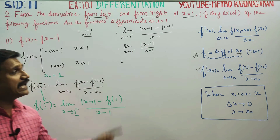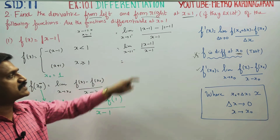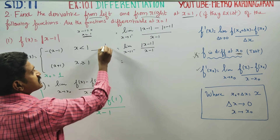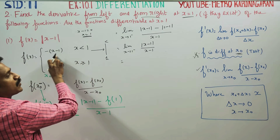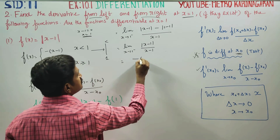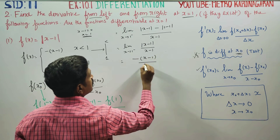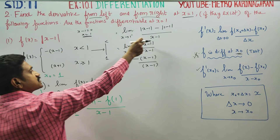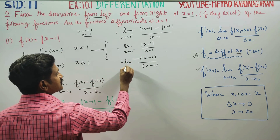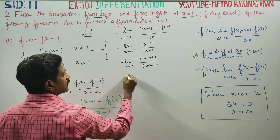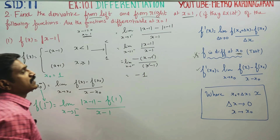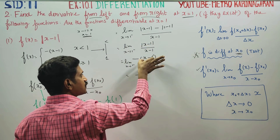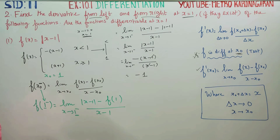Because we are approaching from the left, x < 1, so |x − 1| = −(x − 1). Applying the left-hand limit, we get −(x − 1) / (x − 1) = −1. Therefore, the left-hand derivative f'(1⁻) = −1. This is the left-hand limit result, and in the modulus graph, at this point there is a sharp edge.